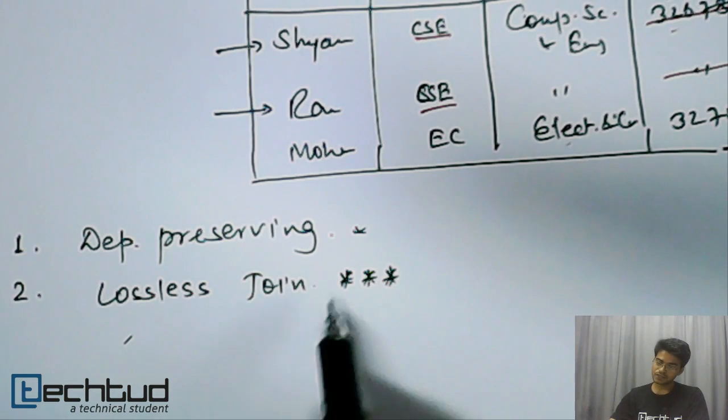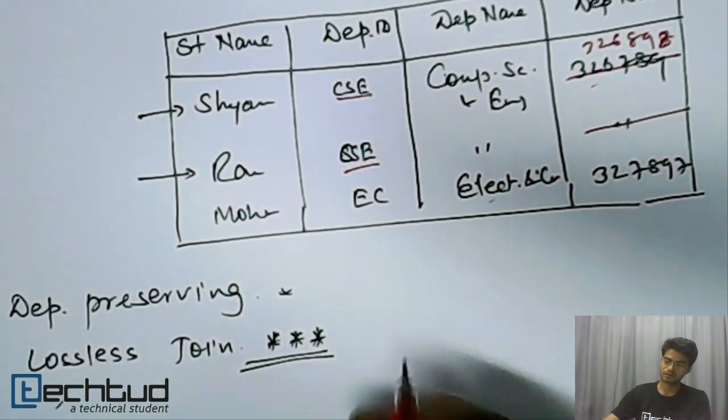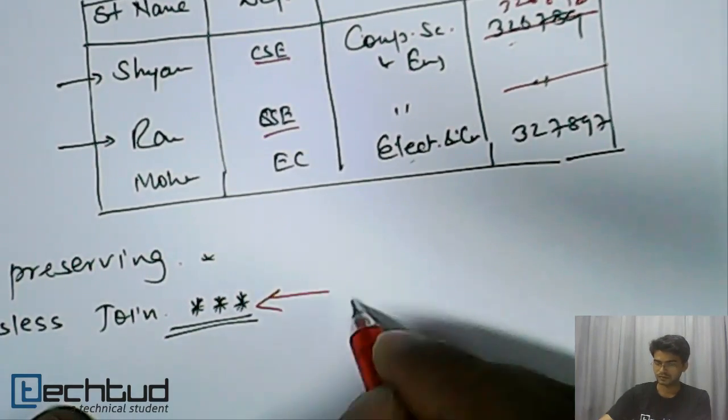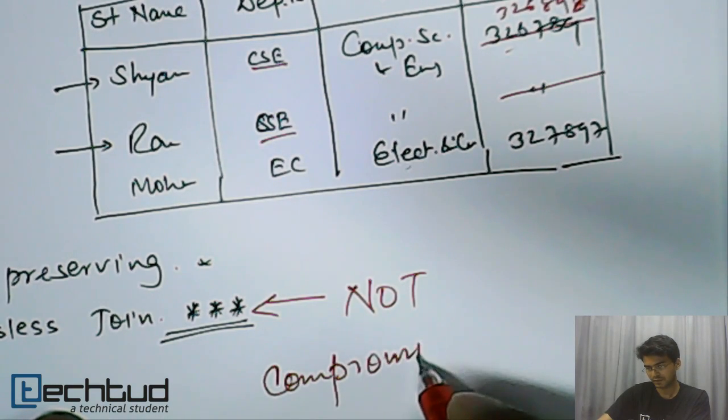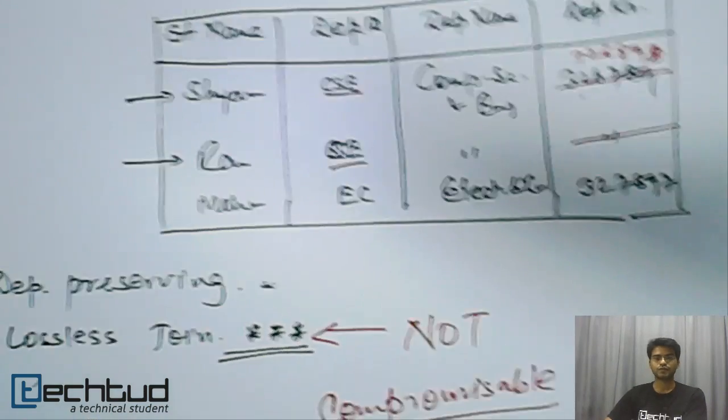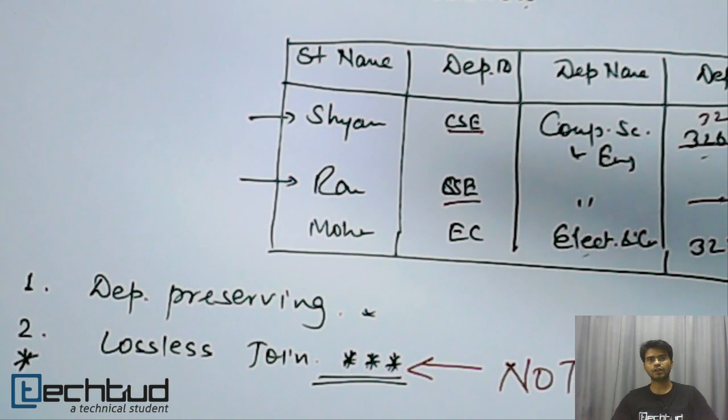This is one of the property or one of the design goals which we cannot compromise with. We cannot compromise with lossless join. The database always should be lossless. We cannot say okay let one of the elements maybe be lossy or we can lose it. When we think about this, our entire perspective and goal is gone, because once data is lost then what is the meaning of database? We are studying this to make sure that any of the data is not lost.